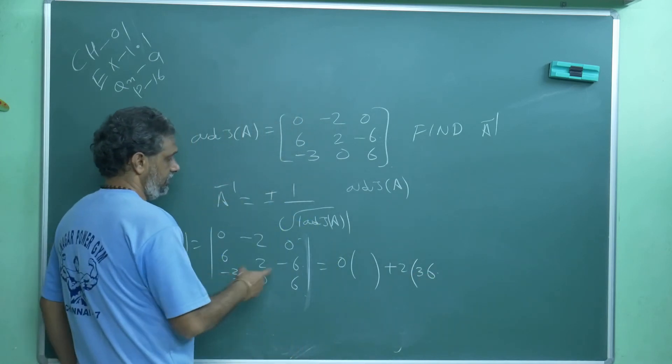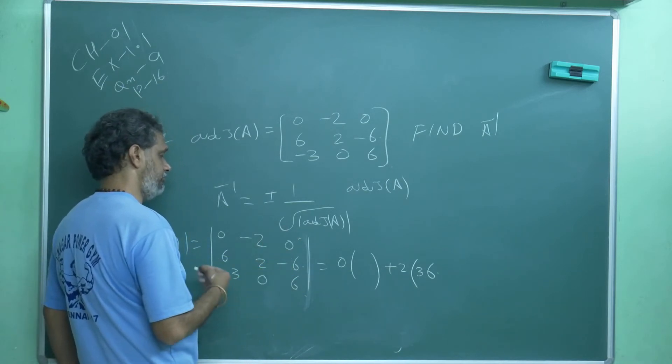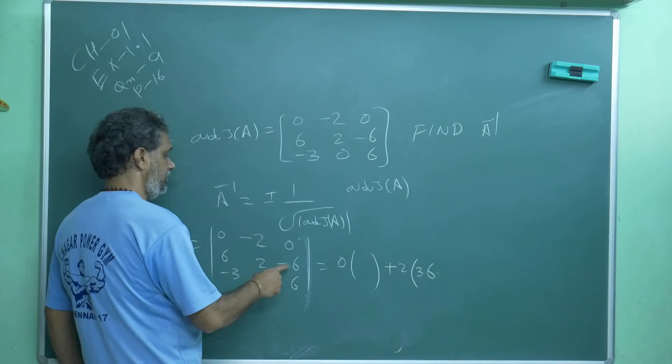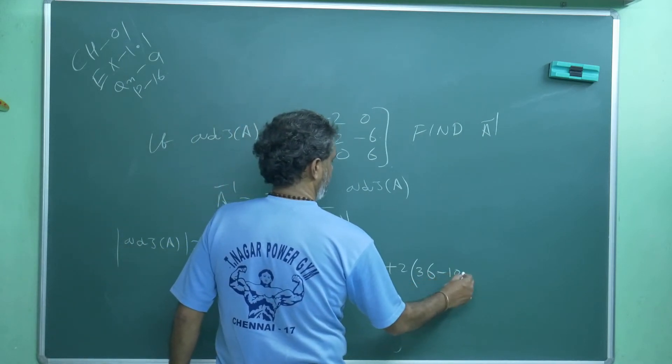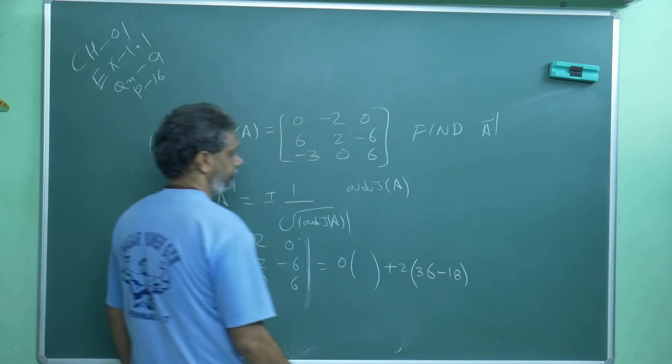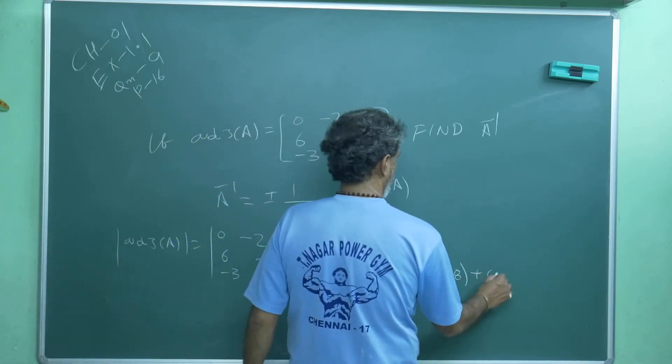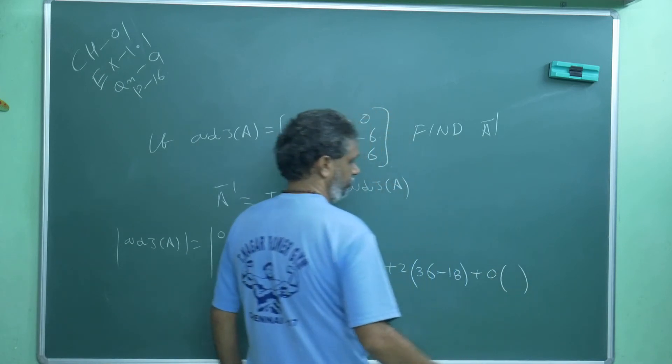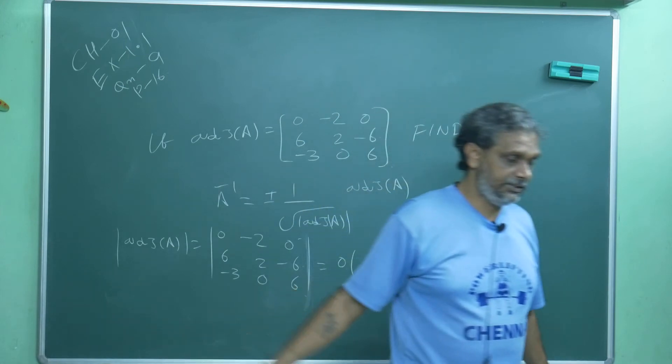Then minus 3 into minus 6, another minus. Minus 3 minus is totally minus. So 3 into 6 is 18. Plus 0 into anything, I don't want to.